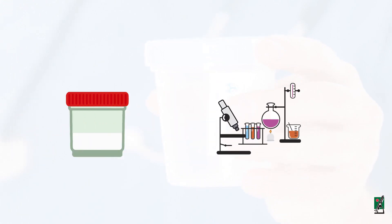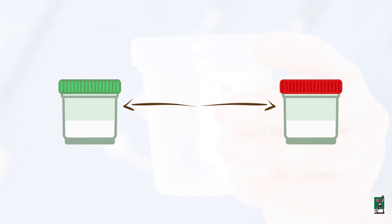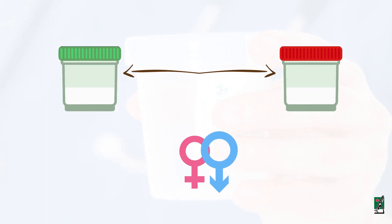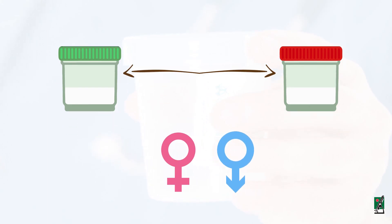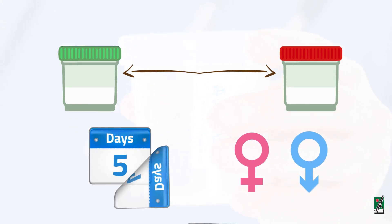The sample required is a semen sample collected in a sterile, wide-mouthed container provided by the lab, often collected on site. Two separate collections on two separate days may be required. You should refrain from having sex or masturbation for three to five days before sample collection.